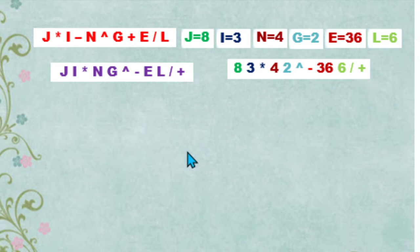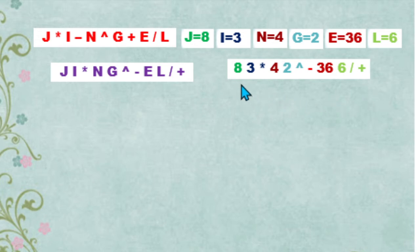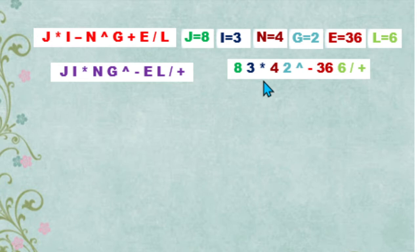In evaluating this postfix expression, we scan it from left to right and look for the first operator. So we start scanning from 8, then 3, then our multiplication operator — this is our first operator.